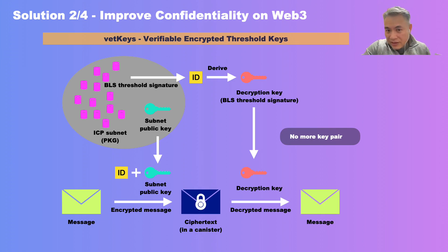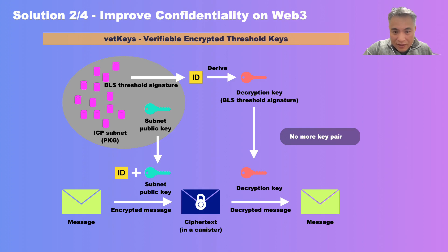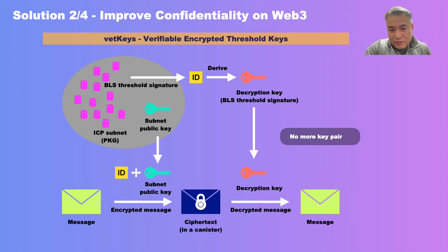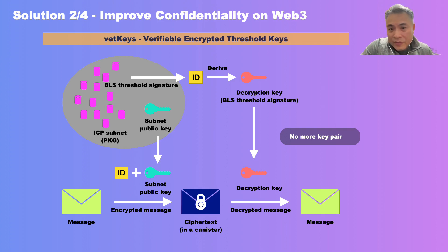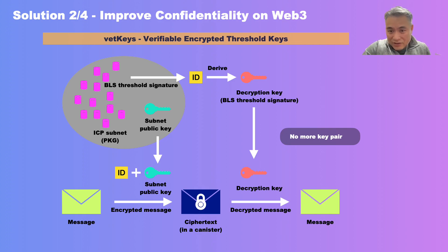So the DFINITY team came up with a distributed key derivation scheme called VETKeys. VETKeys uses the nodes on an ICP subnet to replace the private key generator in identity-based encryption. As the chart illustrates, multiple nodes jointly generate the master key — no individual node knows the final key, and there is no single point of failure. Even if some nodes are compromised, the actual private key will not be directly revealed. Compared to traditional schemes, VETKeys does not rely on a trusted execution environment and has a higher security level. Users can encrypt private data, and nodes collaborate to decrypt the key and send it to the user without revealing the actual key in the process. Moreover, a single subnet public key can derive unlimited separate identity keys — unlocking a whole new paradigm on blockchain never seen before.